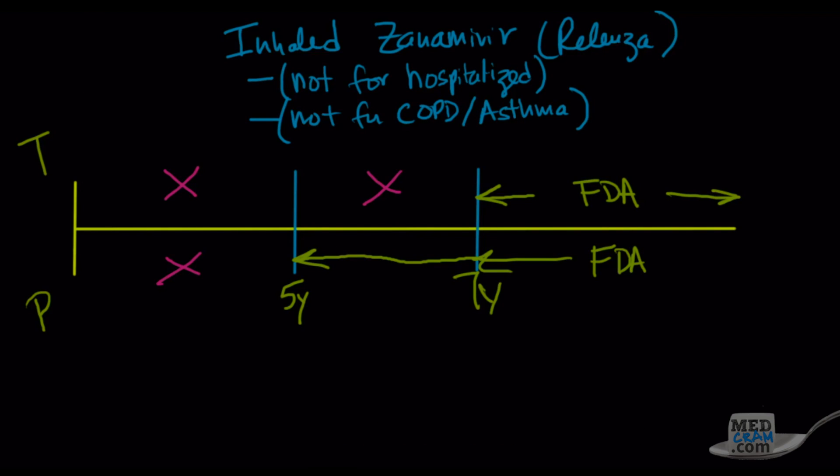The FDA is only allowing you to treat with this medication down to seven years and prophylaxis down to five years of age. What is the actual treatment? Well, it's an inhaler, so it's two puffs Q12 hours, whereas prophylaxis is two puffs Q24 hours. The treatment is five days, and prophylaxis is 10 days.